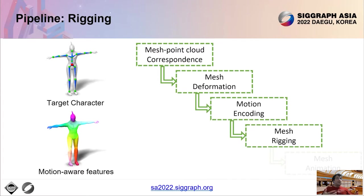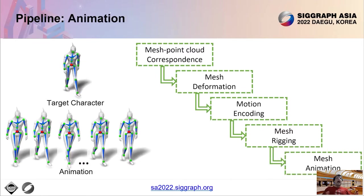Therefore, these features are helpful in our next stage, which performs rigging. The features drive the prediction of an appropriate skeleton and skinning weights for the target mesh. Now, the last stage finally animates the predicted rig so that the target character follows the motion of the deformed meshes and therefore the original point cloud motion.